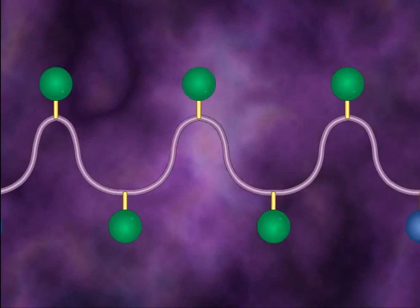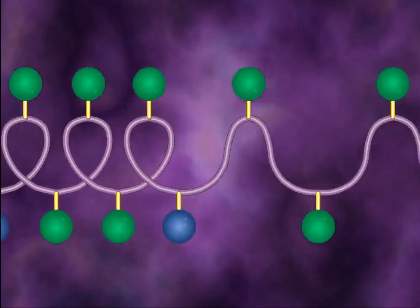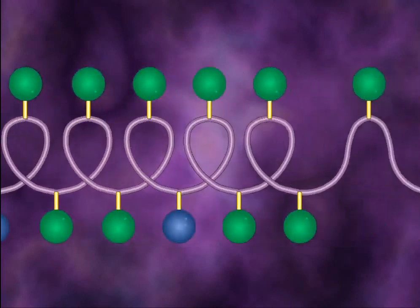Secondary structure is the helix that the protein chain curls into as a result of hydrogen bonds and other weak forces.